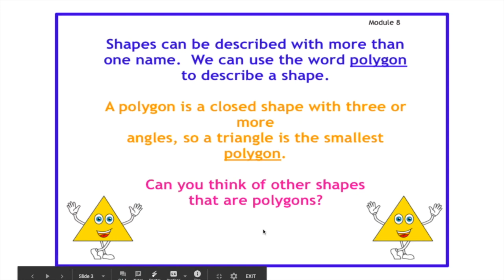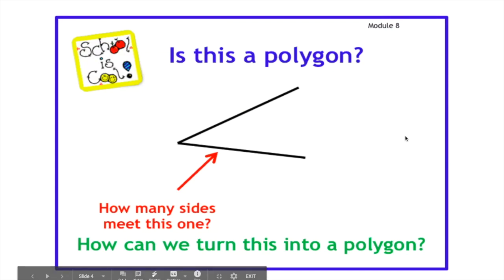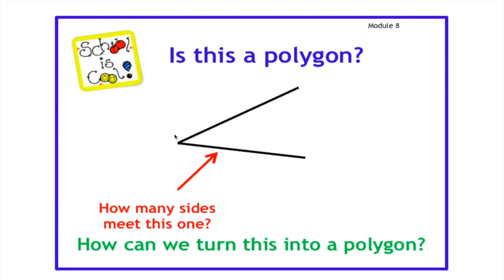Can you think of other shapes that are polygons? You can pause and answer that. Is this a polygon? If you said no, that is correct. As you can see here, it is opened and all polygons are closed. Also, if you look closely, you'll see it only has one angle or vertex. A vertex is the meeting point of two lines that form an angle. Remember, a polygon is a closed shape with three or more angles.